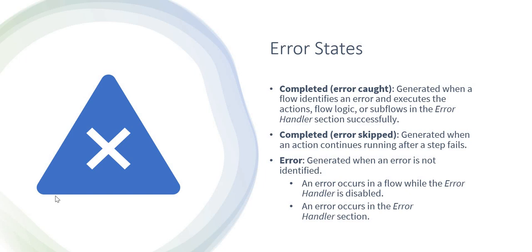The first error state is 'Completed - Error Caught.' It is generated when a flow identifies an error and executes all the actions, flows, or subflows in the error handler section successfully. So if you have defined an error handling section and some error occurs, and all the steps you defined in the error handler section run successfully, the state of the flow would be 'Completed - Error Caught.'